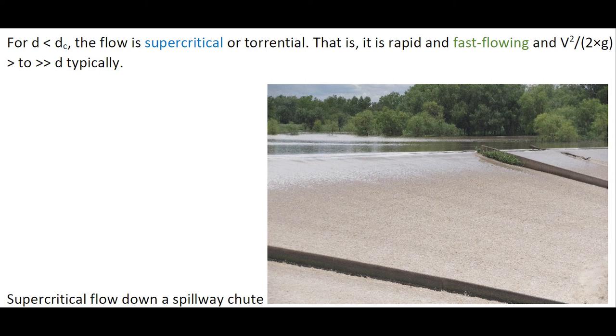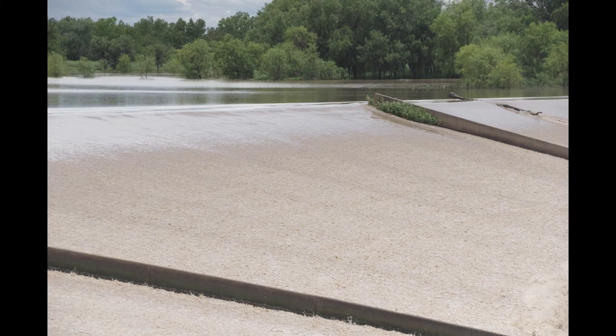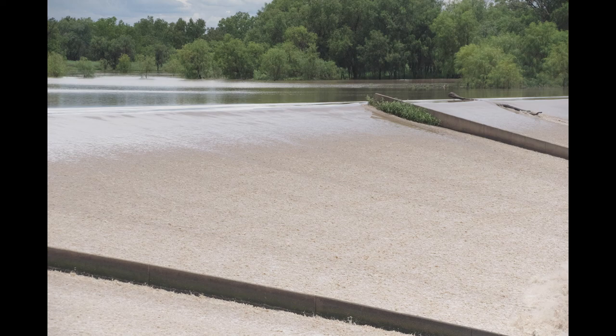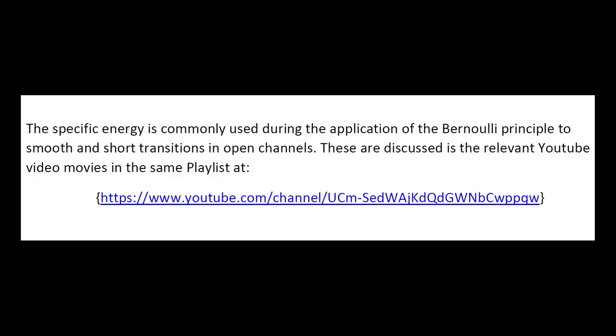When the water depth is less than the critical flow depth, the flow is supercritical or torrential. It is rapid and fast flowing. An illustration is this supercritical flow down a spillway chute.